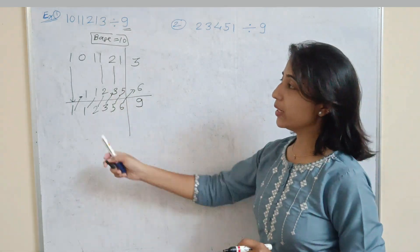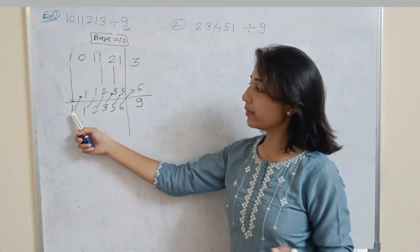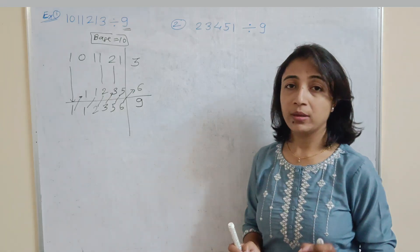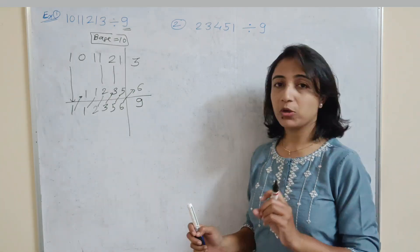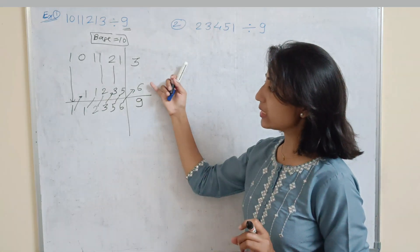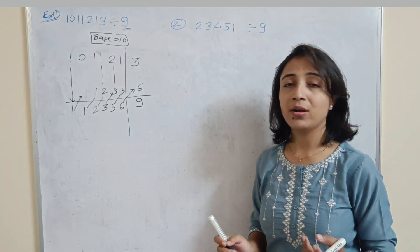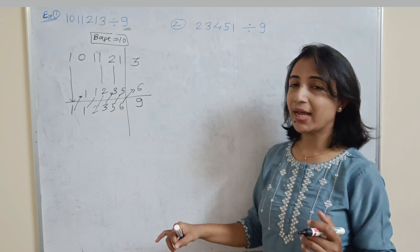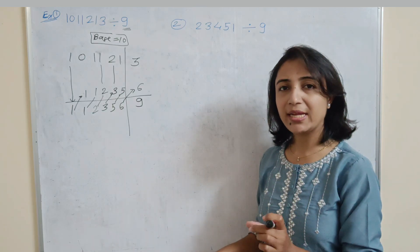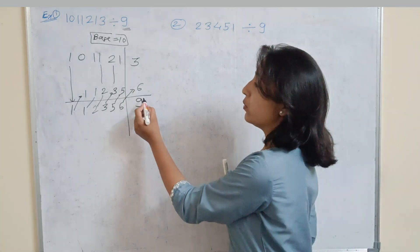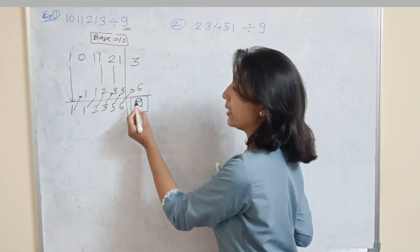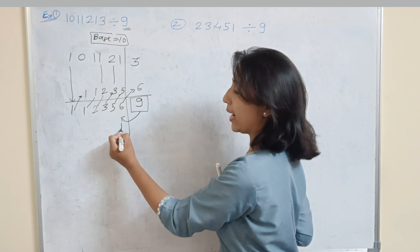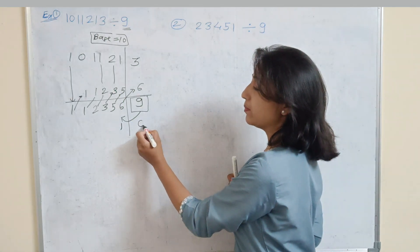Now here is the important point. The first number is written as it is, and step by step we add each result to the next number — that gives us the quotient. But notice we are getting 9 on the right side, which would be the remainder. When dividing by 9, a remainder of 9 is not possible. So when we get 9 as the remainder, we must add 1 to the quotient part and the remainder becomes 0.